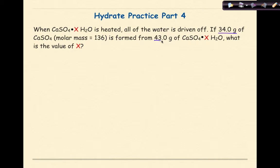The 43 grams of hydrated CaSO4 represents our hydrate. Let's write down our given information. Our hydrate is 43 grams, our anhydrate is 34 grams.